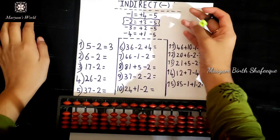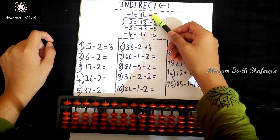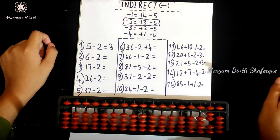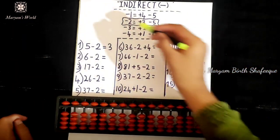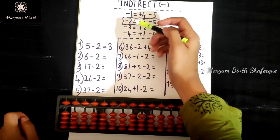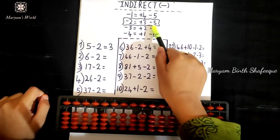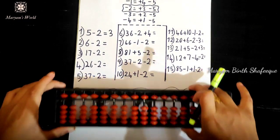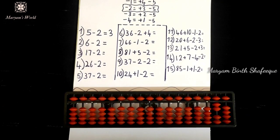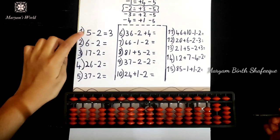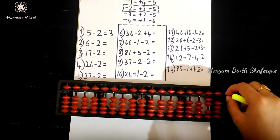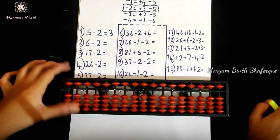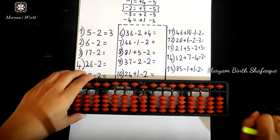We have friend minus 5 plus 5, indirect subtraction, friend plus 5 minus 5. I will show you. Minus 2 minus 2 equals plus 3 minus 5. I will show you. Set to 0. 5 minus 2 minus 2.